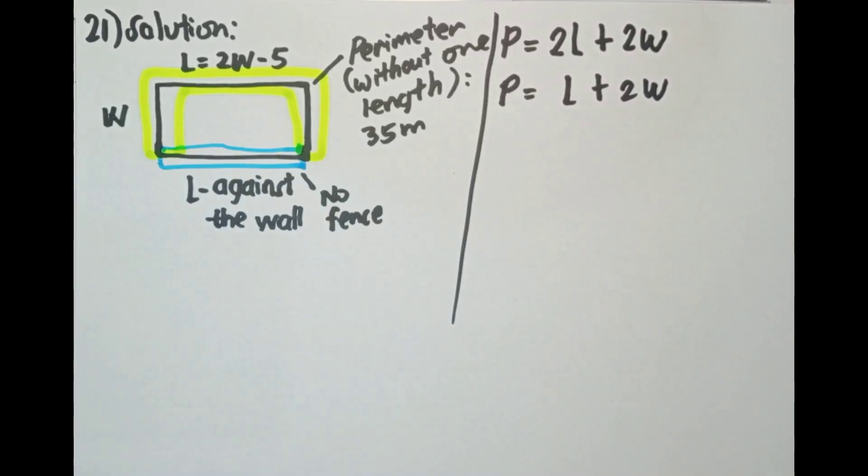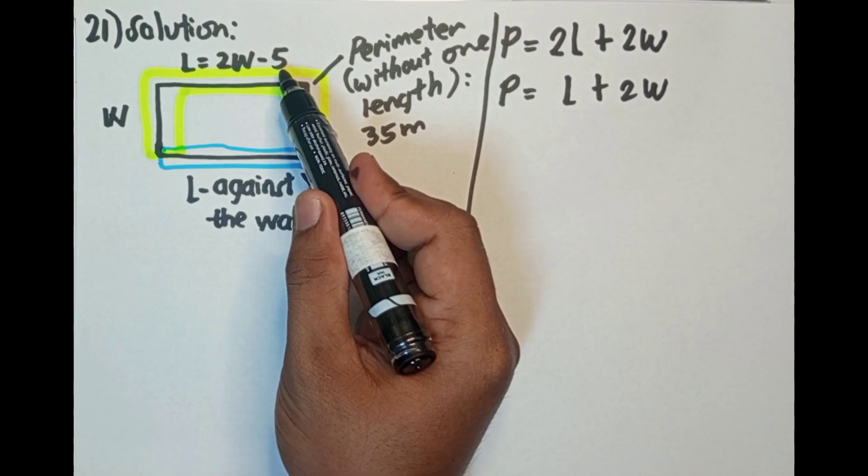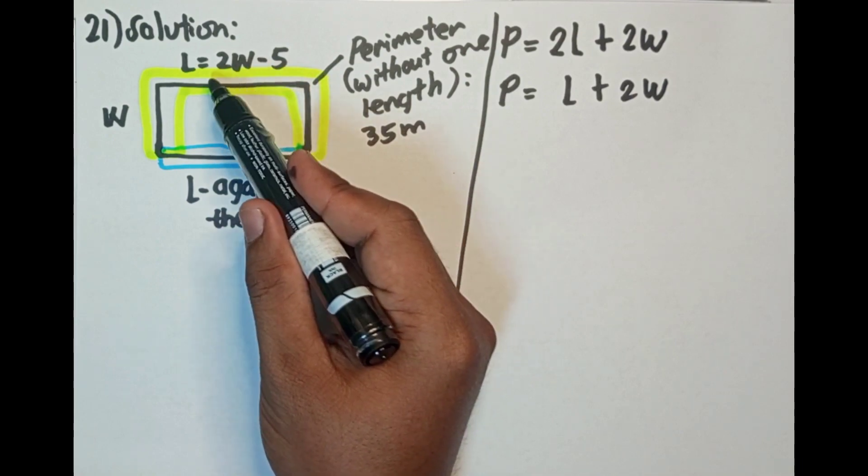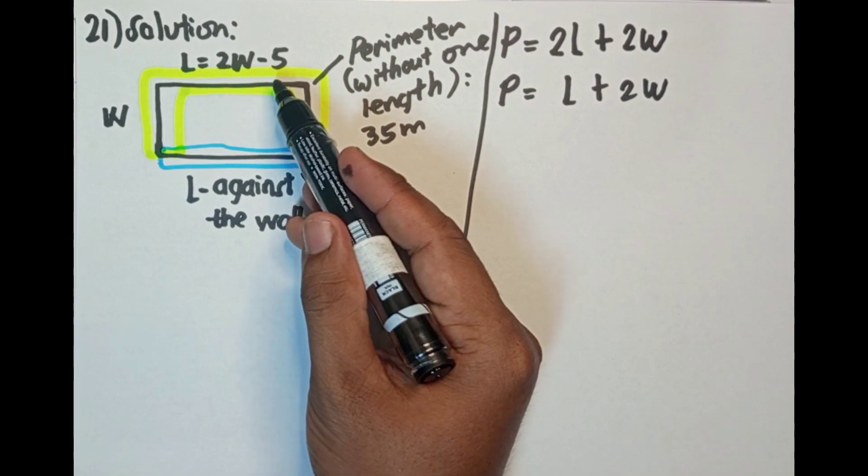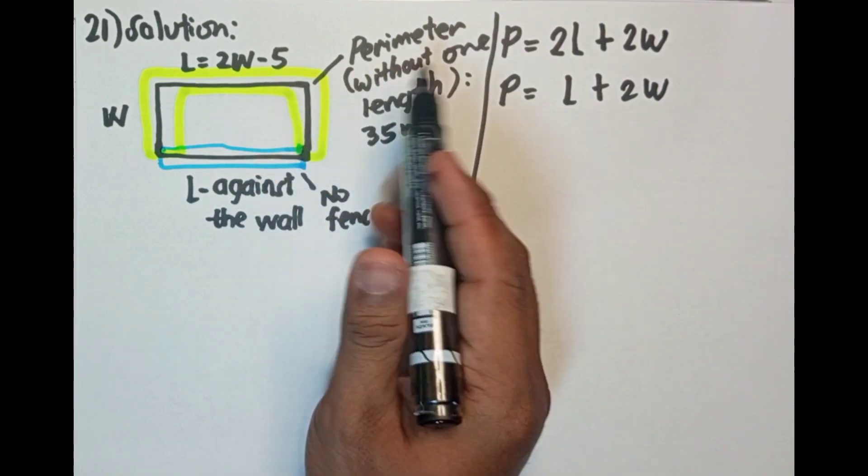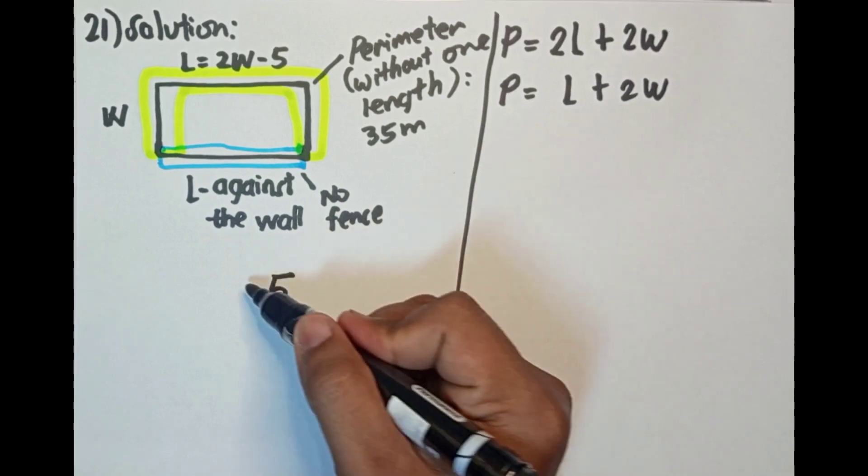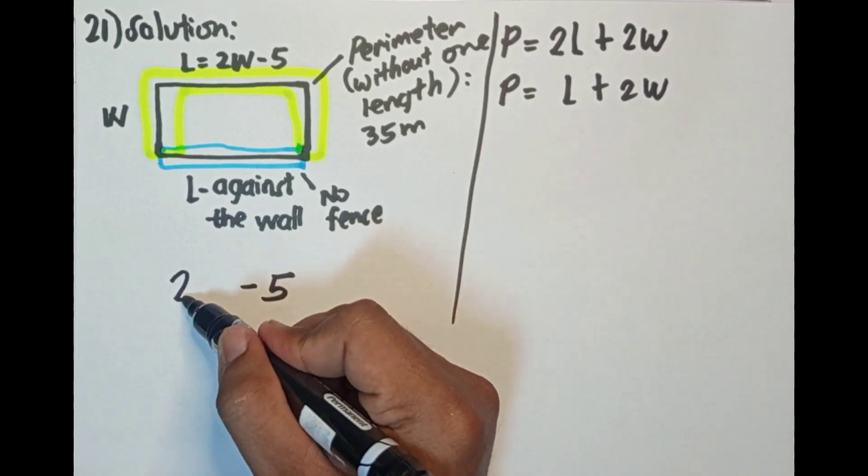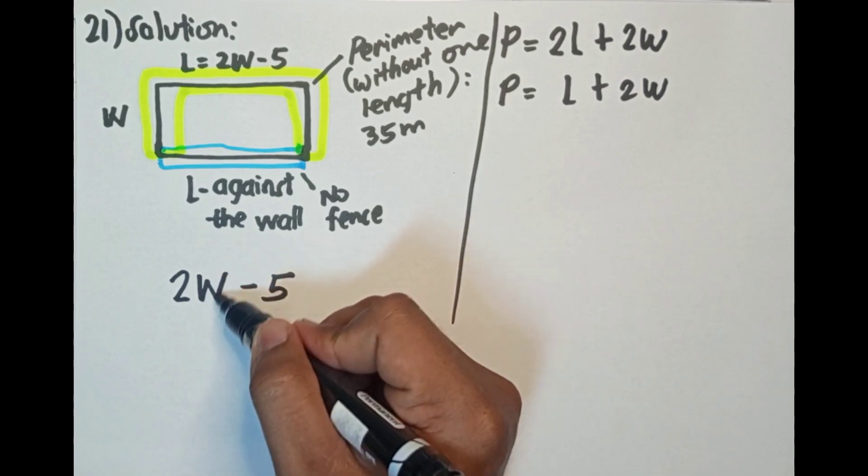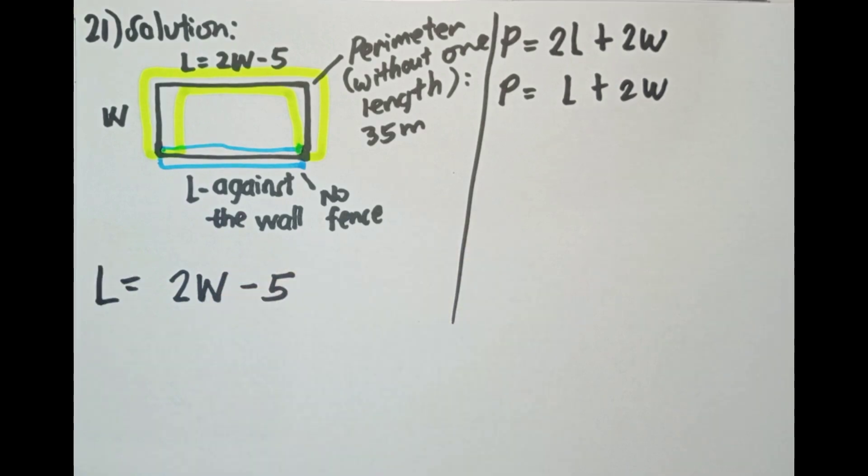So ang ating length, as sabi sa problem, a rectangular lot has length equal to 5 less than twice its width. So yung length is 5 less than twice its width. Working backwards yan ha, hindi 5 minus 2W ha, kundi 5 less than twice its width. Kung mali yung equation agad, mali na agad yung isasubstitute natin, mali na lahat. So dapat doon palang tama na tayo.